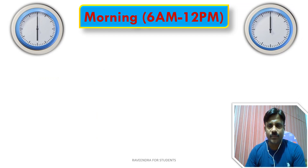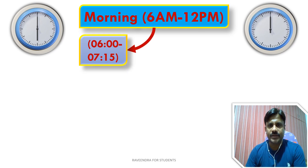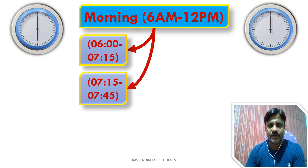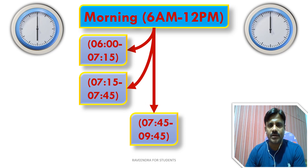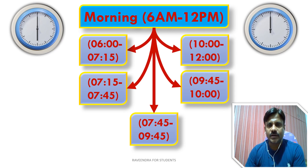In order to manage time effectively, we are dividing the morning slot — 6 a.m. to 12 p.m. — into 5 convenient sub-slots: 6–7:15 a.m., 7:15–7:45 a.m., 7:45–9:45 a.m., 9:45–10 a.m., and 10 a.m.–12 p.m.